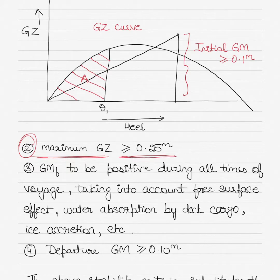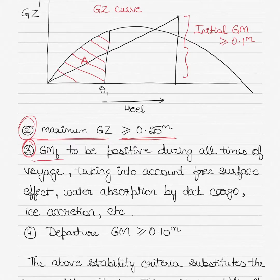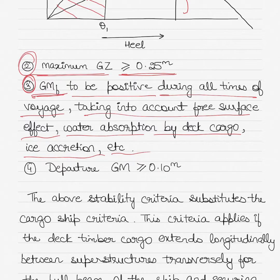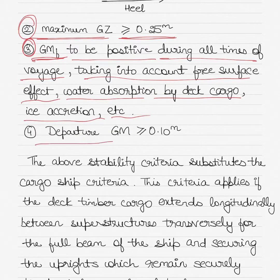If a ship develops an angle of list, the fluid GM — that is, GM taking into account the free surface effect — should be positive at all times, considering water absorption by deck cargo, ice accretion, and any other factors. The GM fluid should never go into a negative value. Finally, the departure GM should be greater than or equal to 0.10 meters.